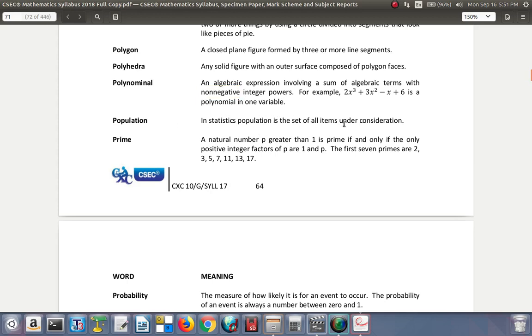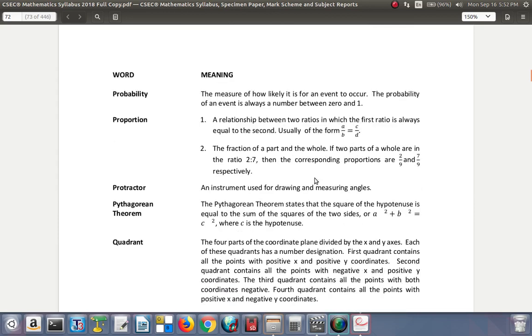Population. In statistics, population is a set of all items under consideration. So like, when they study the population using a census, they try to get in touch with everybody. That's a population. When you contact only some of the persons in the population, that is a sample. Prime. A natural number P greater than 1 is prime if and only if the only positive integer factors of P are 1 and P. So, it has factors of only 1 and itself. Only 1 and itself can divide into it without leaving a remainder. The first seven prime numbers are 2, 3, 5, 7, 11, 13, 17. 2 is the only prime number that is also an even number.